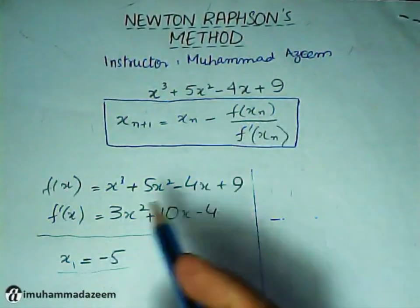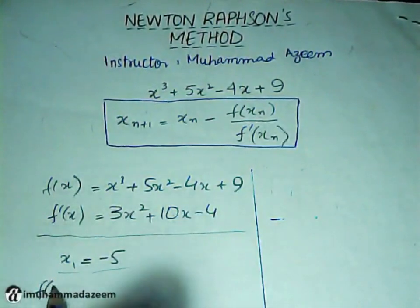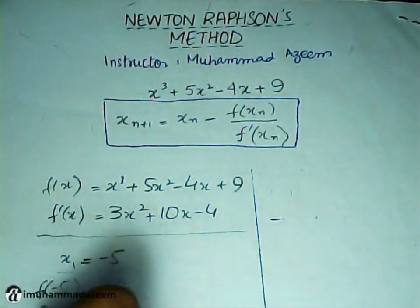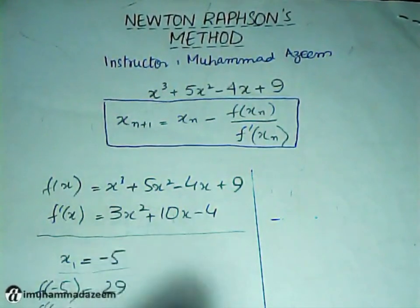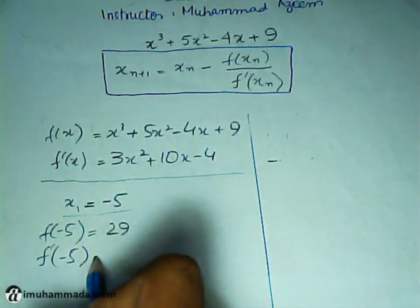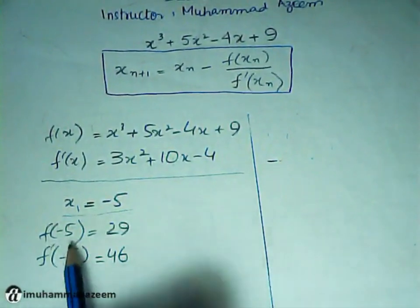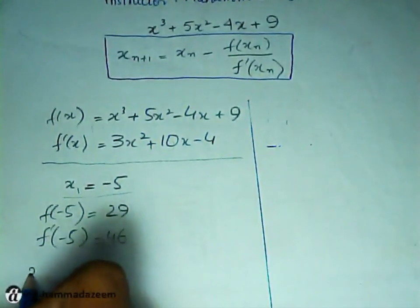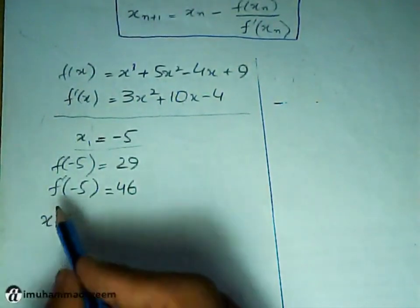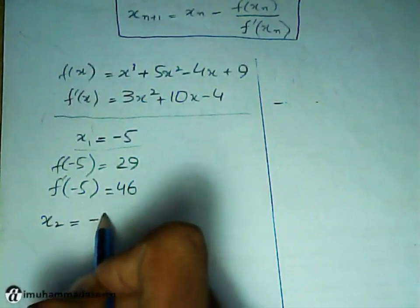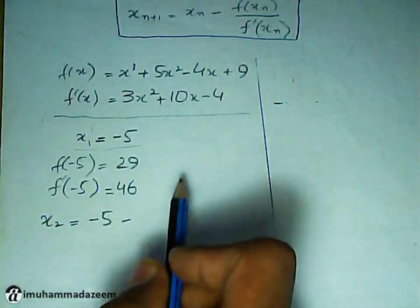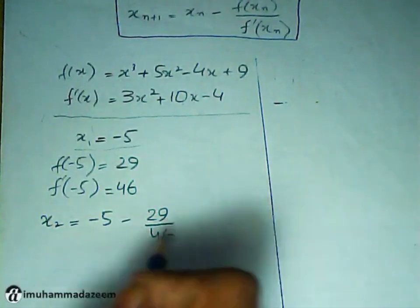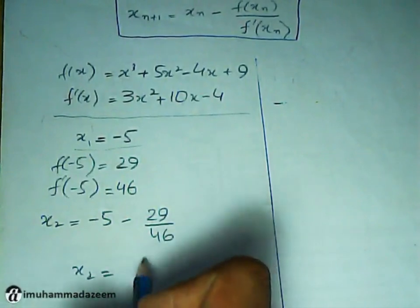We find the function of X₁ and function of f prime of X₁. So f(X₁), that is f(-5), is going to be 29. Similarly, f prime of minus 5 is going to be 46. So we put these values in the Newton Raphson's formula: X₂ equals minus 5 minus 29 over 46, that is f(x) over f prime of x. So it comes out to be X₂ equals minus 7.33.